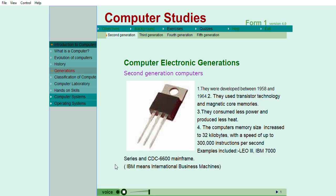The second generation of computers was an upgrade of the first generation and they used transistors for power generation with less heat production. There was an increase in memory size to 32 kilobytes with a speed of up to 300,000 instructions per second.